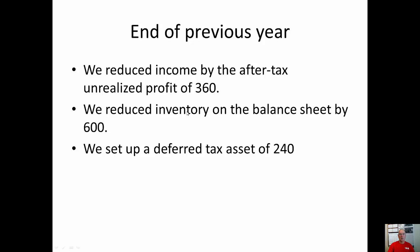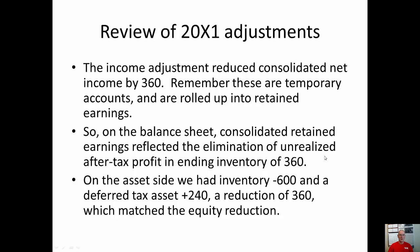On the balance sheet we reduced inventory by $600 and we set up a deferred tax asset of $240. Remember that income accounts are temporary accounts and they roll up into retained earnings. So the $360 reduction of income in 20x1 actually caused retained earnings on a consolidated basis to be $360 less. On the asset side that's balanced by minus $600 in inventory but the creation of a deferred tax asset of $240, for a total reduction of $360. So this balances out our balance sheet with those two reductions.